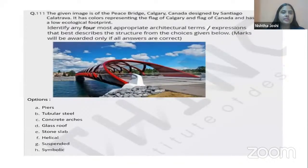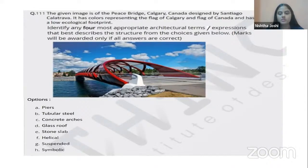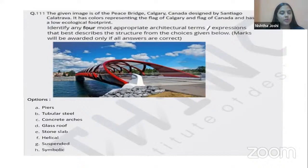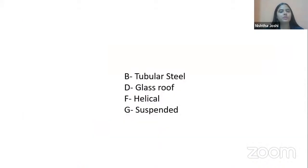The next image is of the Peace Bridge. Identify four most appropriate terms related to this structure. We see glass used as a material, metal elements, and this is a suspended bridge over a water body. The right options are: B (tubular steel), D (glass roof), F (helical — referring to the shape), and G (suspended).